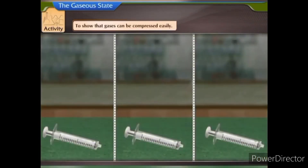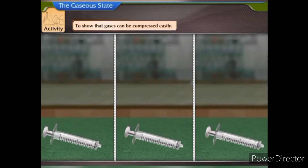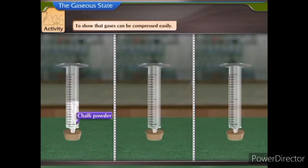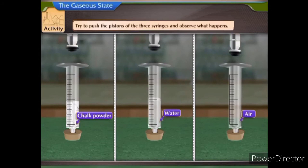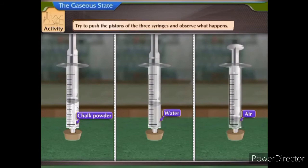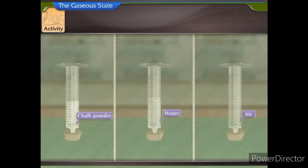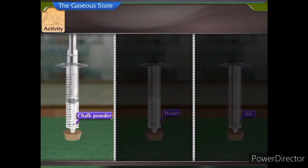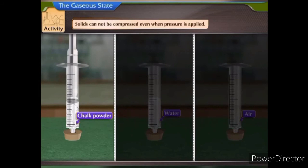Let us perform an activity which shows that gases can be compressed while solids and liquids cannot. Take three syringes having frictionless pistons. Close their nozzles by inserting them in separate rubber corks. Fill chalk powder in the first syringe and water in the second. Leave the third syringe empty — air is already present in it. Try to push the pistons and observe what happens. The piston of the syringe containing chalk powder does not move much even after pressure is applied. This shows that solids cannot be compressed.